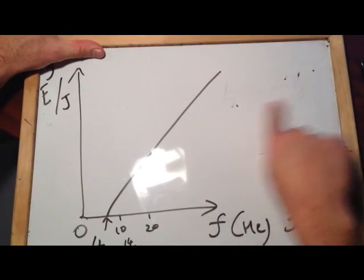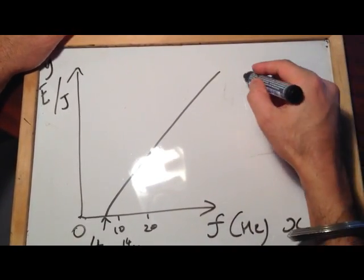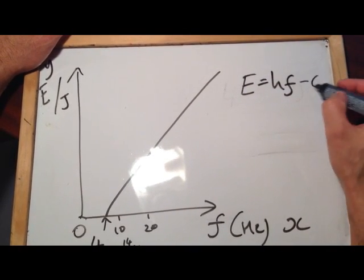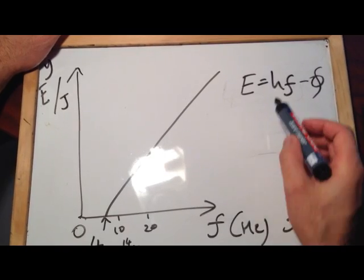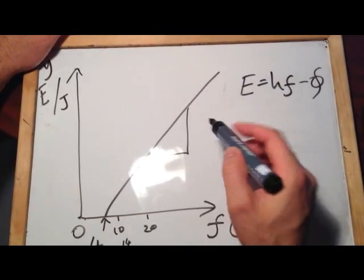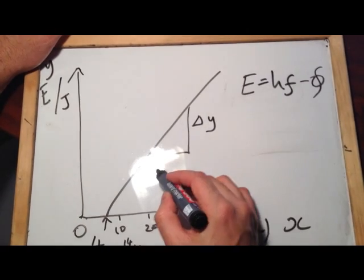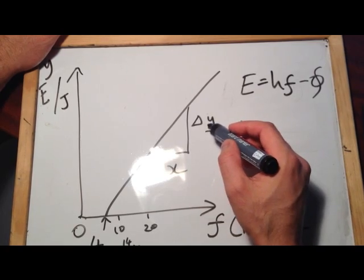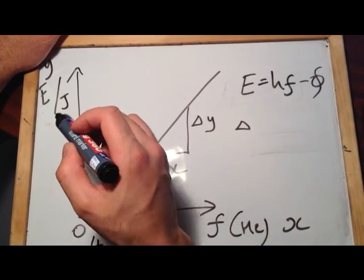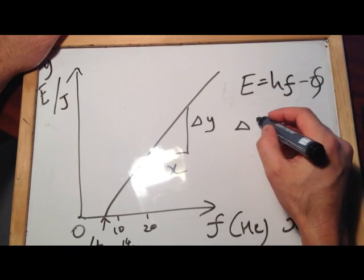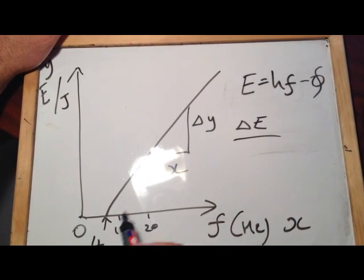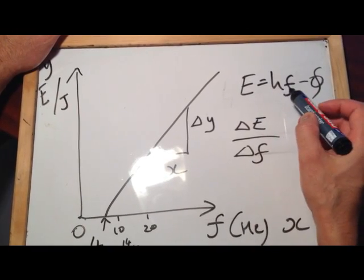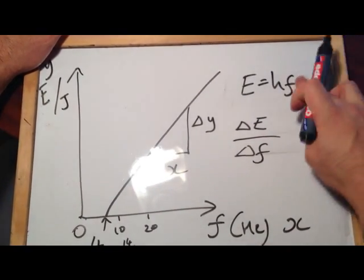So we would use this equation, E equals hf minus the work function. What we'll find is that if we work out a gradient for this particular line, we can say I've got a change in y divided by a change in x, a change in y, but if I look at my y function, my y function is actually energy, that's what's on the y-axis, it's a change in energy divided by change in x, which is actually frequency, change in frequency. If I rearrange this equation, you can see,